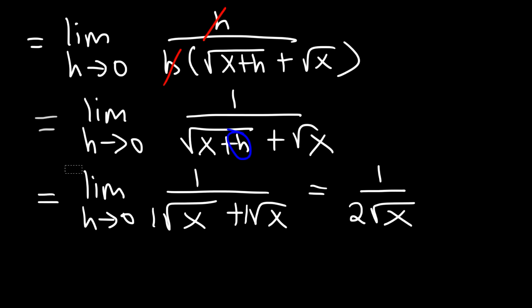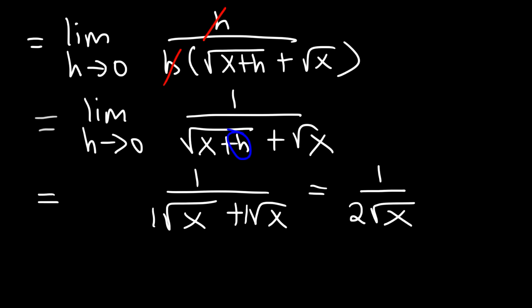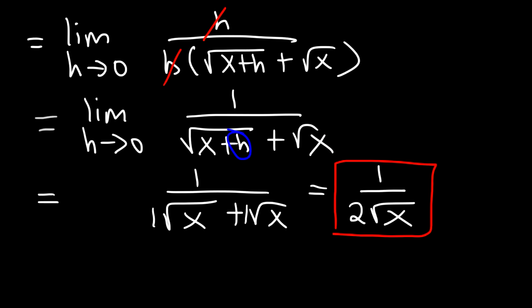By the way, this limit expression should no longer be present. When you replace h with 0, this expression disappears, so it shouldn't be in this step anymore. This is the final answer. So that's the first derivative of the square root of x.